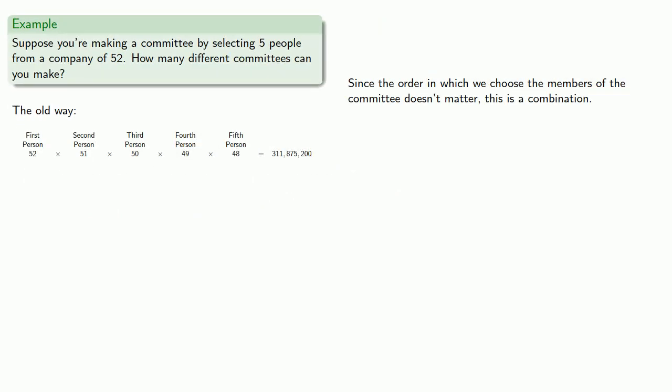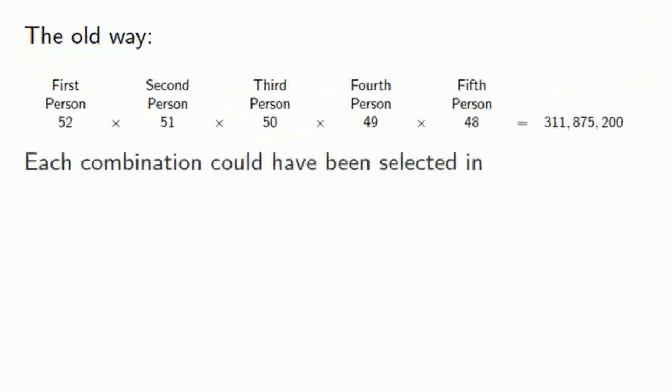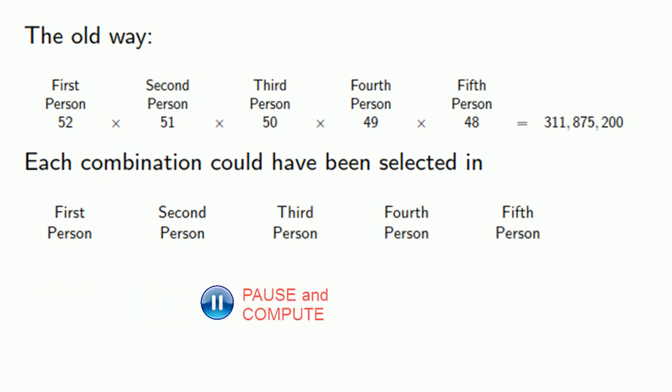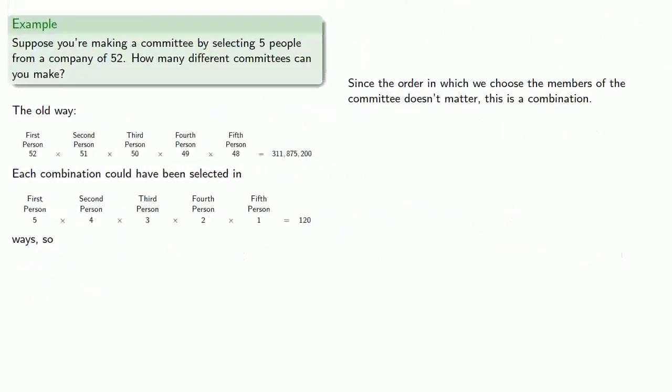Since the order in which we choose the members of the committee doesn't matter, this is actually a combination. And so each combination we formed by selecting one of the people first, another one second, and so on. And so each combination could have been selected in 120 different ways. And so 120 times the number of combinations gives us the number of permutations. And so the number of combinations will be still a whole bunch.